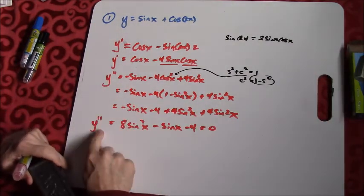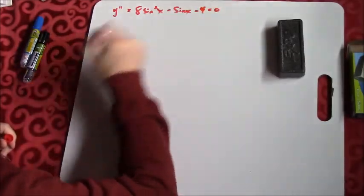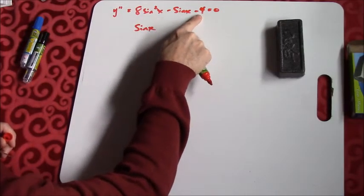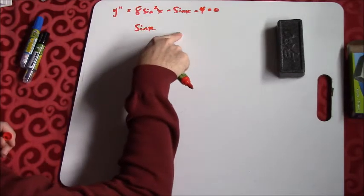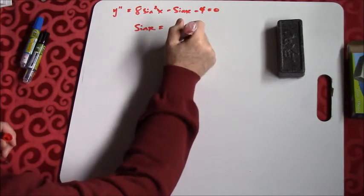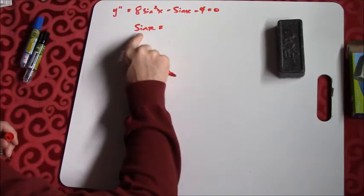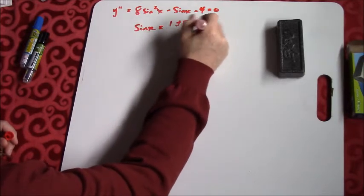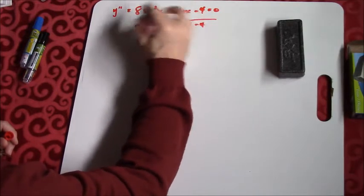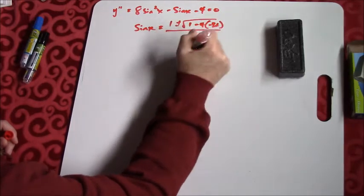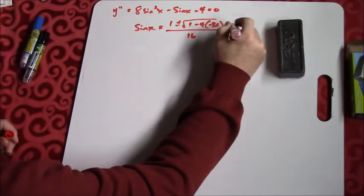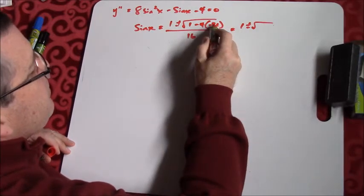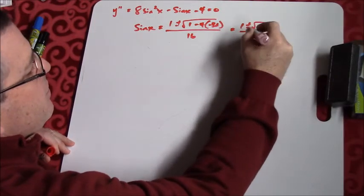Setting this equal to zero: the sine of x, just like if this were 8x squared minus x minus 4 and I used the quadratic formula, x equals negative b plus or minus the square root of b squared minus 4ac all over 2a. I don't have variable x now — I've got the trig function sine of x. So sine of x equals 1 plus or minus the square root of 128 plus 1, that's 129, over 16.